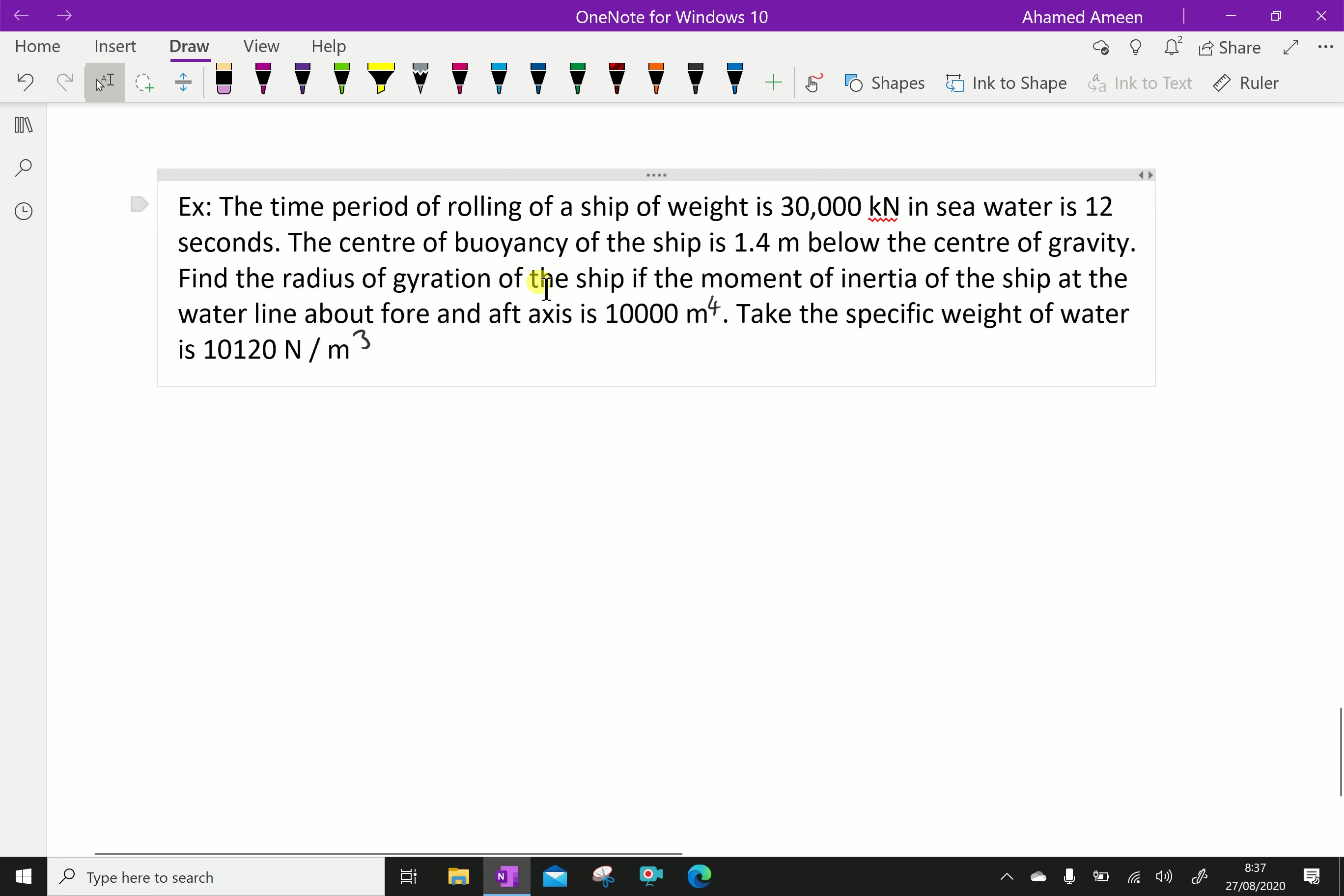The center of buoyancy of the ship is 1.4 meter below the center of gravity. Find the radius of gyration if the moment of inertia at the waterline about fore and aft axis is 10,000 meter power 4. Take the specific weight of seawater as 10,120 Newton per meter cube.